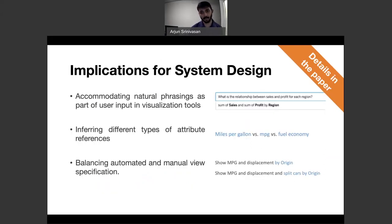Based on this characterization, we discussed several design implications, including how systems should accommodate more natural user phrasing instead of making users adjust to what systems can understand, how we need to support variations in attribute references, and how systems need to continue implicitly inferring visual encodings while also giving users control over specifying encodings manually.